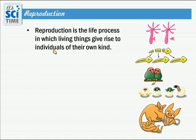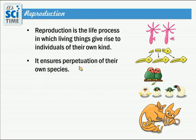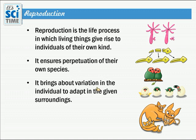The basic definition: reproduction is the life process in which living things give rise to individuals of their own kind — that means reproducing their own species. It ensures the perpetuation of their own species, making this process very important to continue the species through generations. It also brings about variations in individuals to help them adapt to their surroundings.